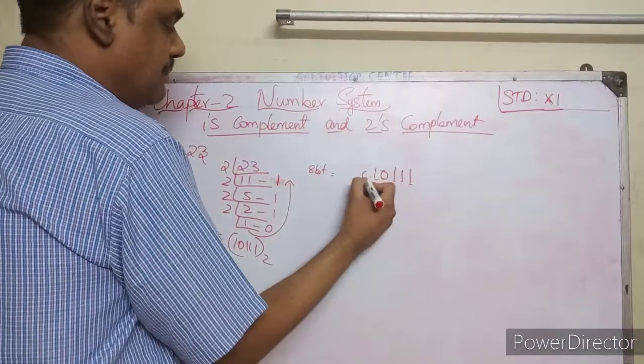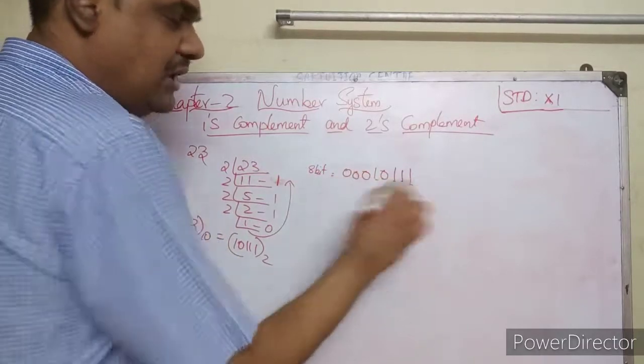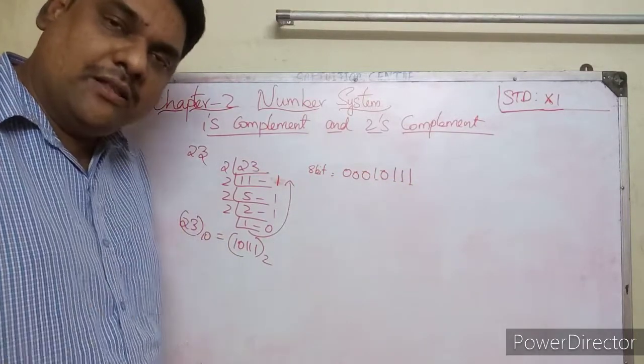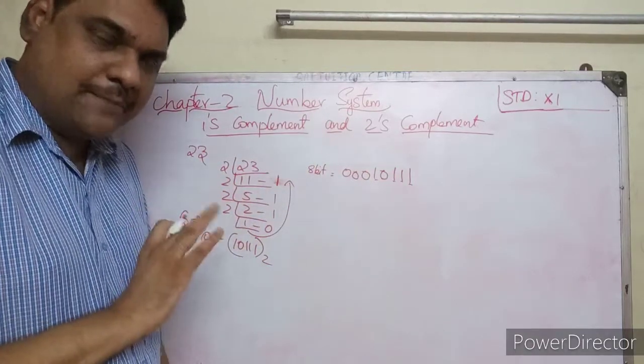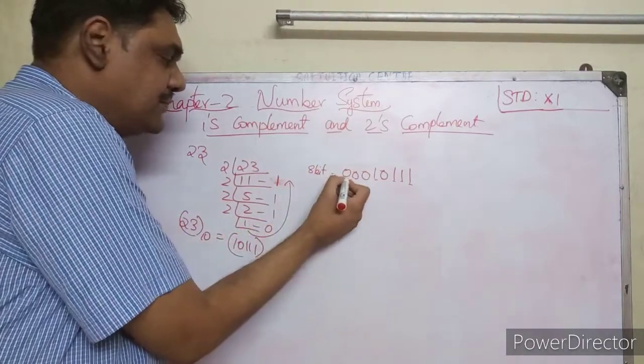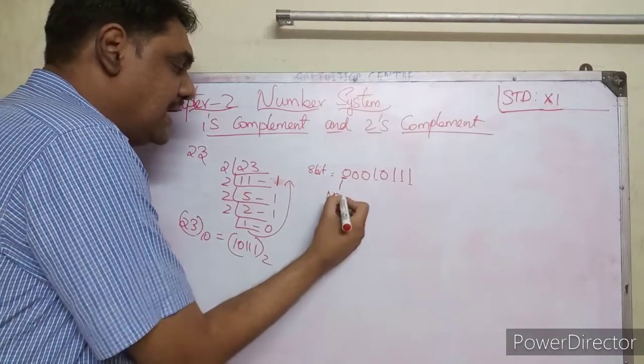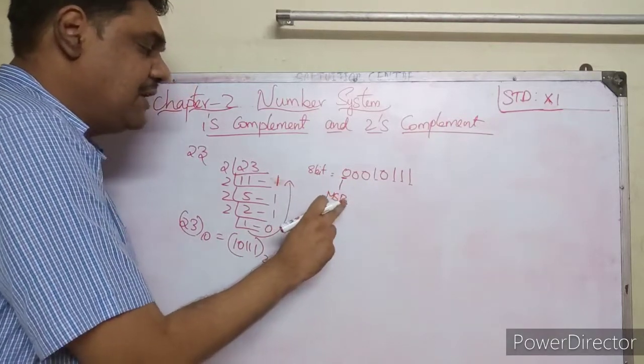We add zeros to make it 8 digits total: 00010111. The computer stores it internally like this in 8 bits.